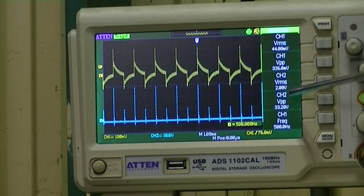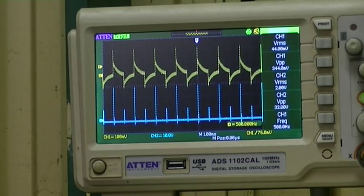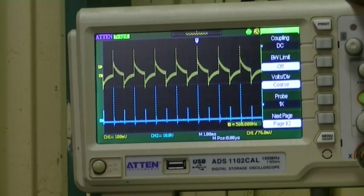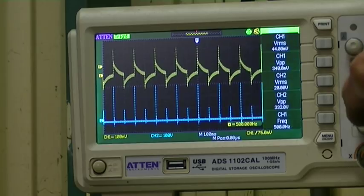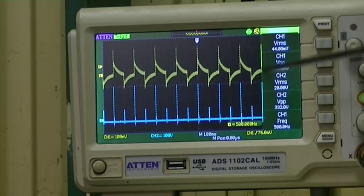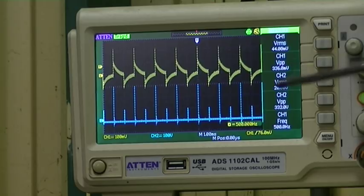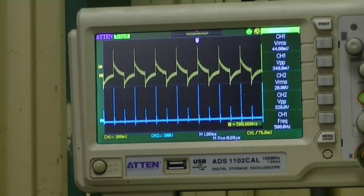And 2 volts RMS on channel 2. Now that's not showing us right there because my probe is set to 10x and this is only set to 1x. That's better. So 20 volts RMS across our blue channel which is our inductive kickback. And once again, 44 millivolts across our load resistor.